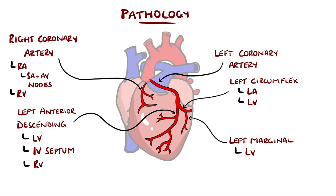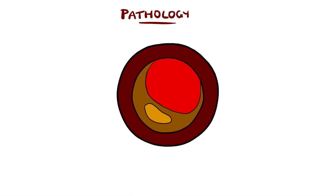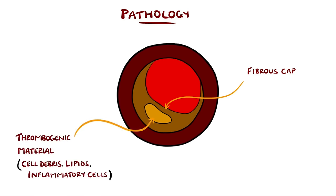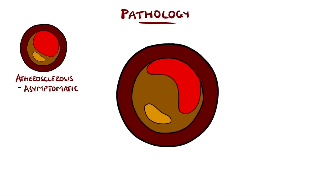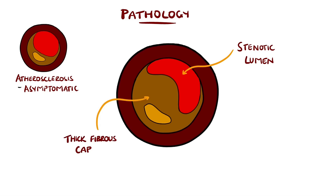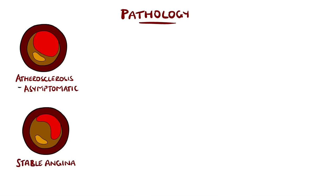Over time, these arteries can become atherosclerotic, which is the formation of fatty plaques on the walls. Atherosclerotic plaques have a fibrous cap that contains cell debris, lipids, and inflammatory cells, that altogether make up a thrombogenic substance. In some cases, these plaques develop over years and extend far enough into the lumen of the vessel to narrow it, which can lead to ischemia if the demand increases, such as during exercise. This is what happens in stable angina, a slow change over time.